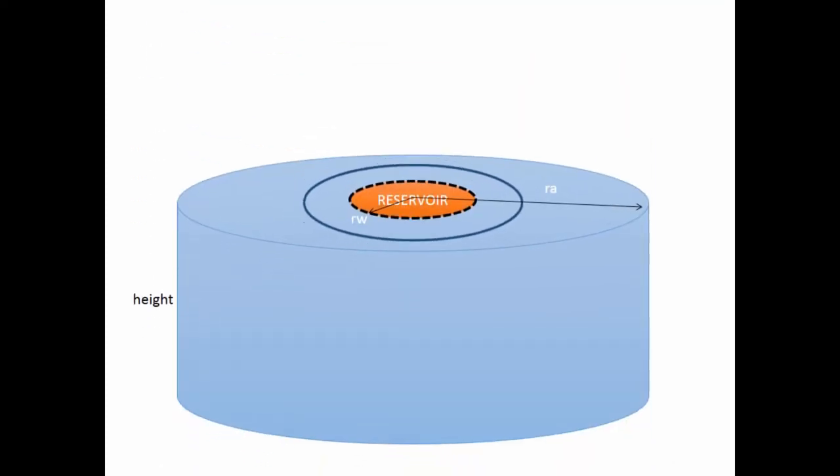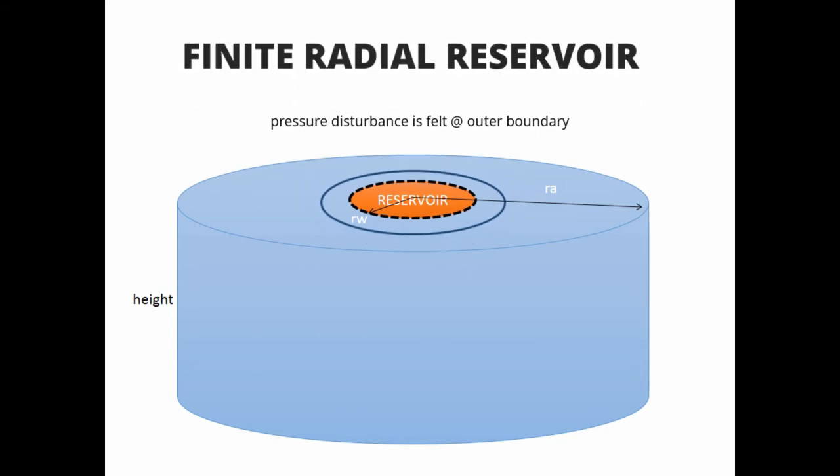However, the whole situation changes when the pressure disturbance is felt at the outer boundary of the reservoir. This is where a new region is formed, known as finite radial reservoir.